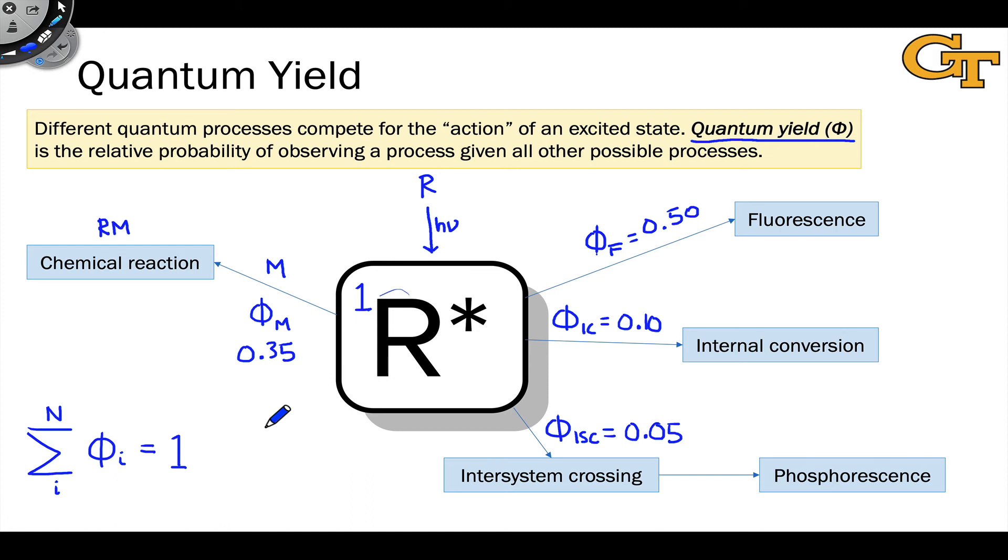The other thing that's worth mentioning about quantum yield at this point is that it's multiplicative, because again, it's a probability. And so if events following what R star does, one of these four processes are independent of what's taking place previously, which is generally a good assumption, we can multiply the probabilities to get an overall sense of the probability of a composite or multi-step process.